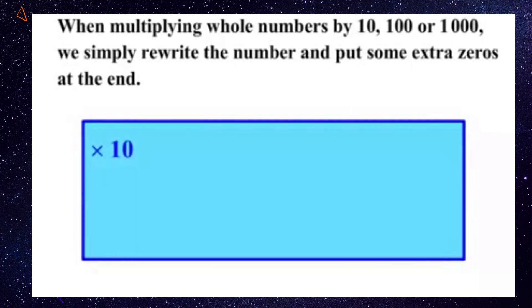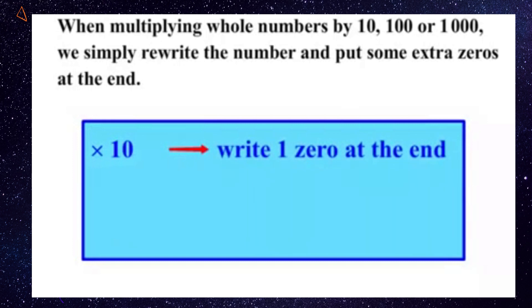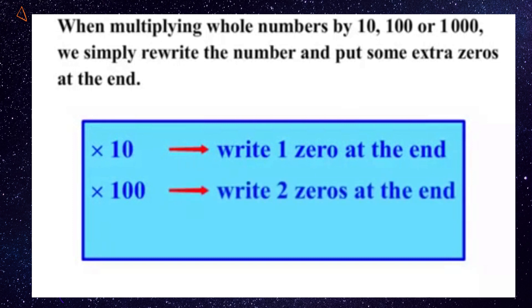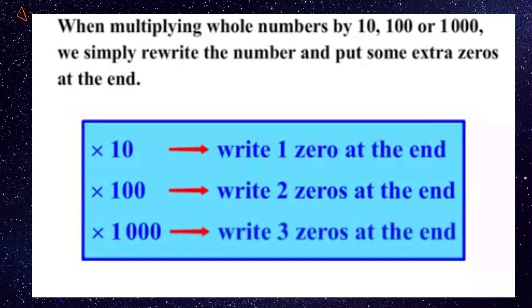If we times by 10, we're going to write one zero at the end. If we times by 100, we simply write two zeros at the end. And if we multiply or times by 1000, we're going to write three zeros at the end.